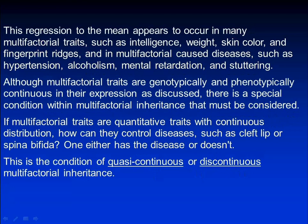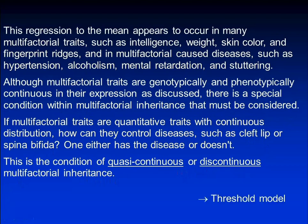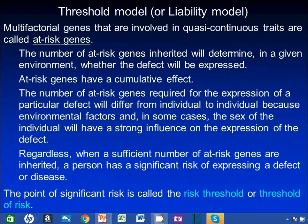If multifactorial traits are quantitative traits with a continuous distribution, how can they control diseases such as cleft lip or spina bifida? These diseases either are present or they are not. This is the condition of quasi-continuous or discontinuous multifactorial inheritance.